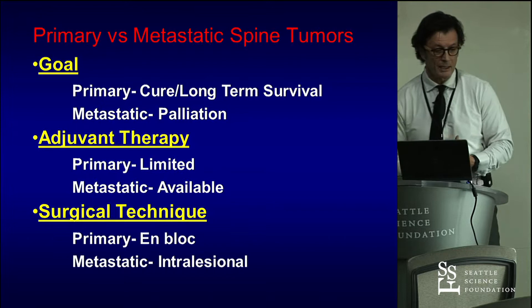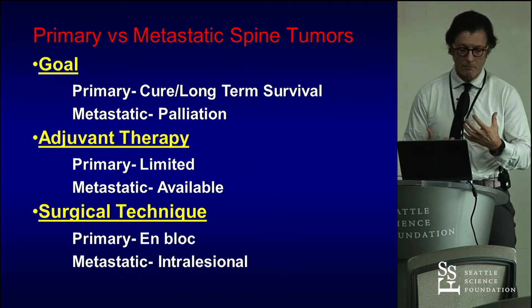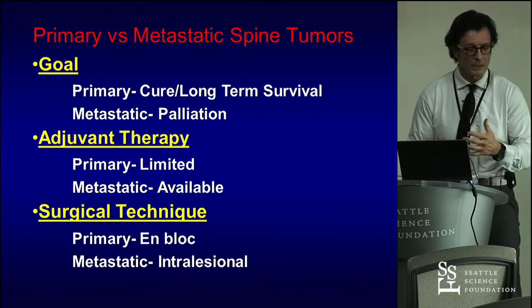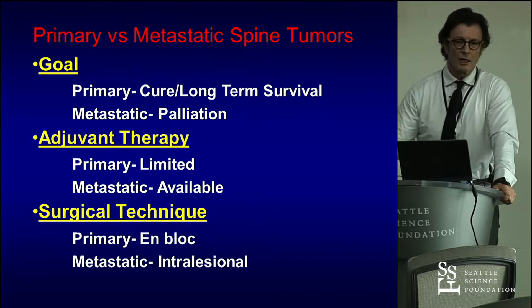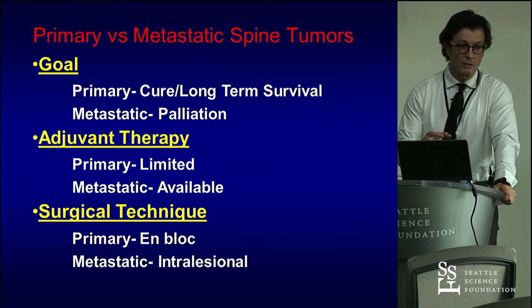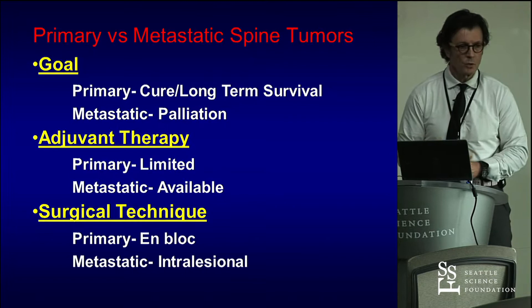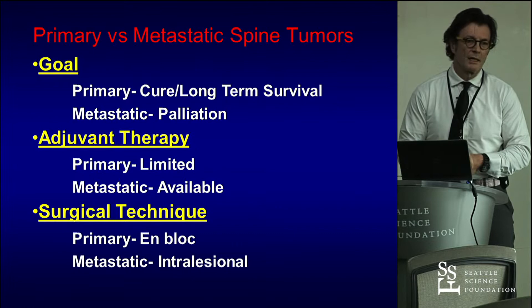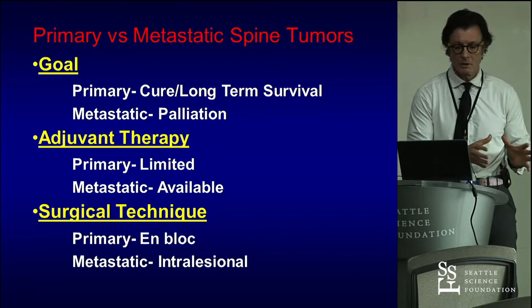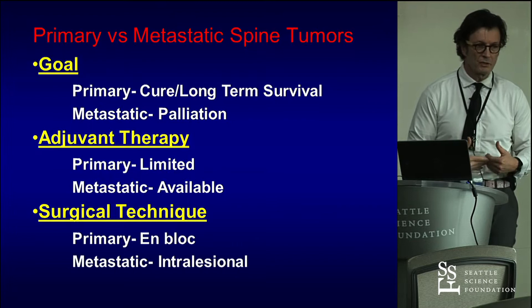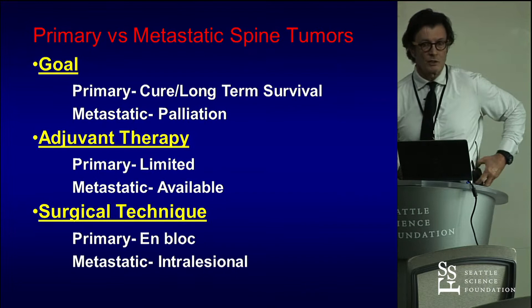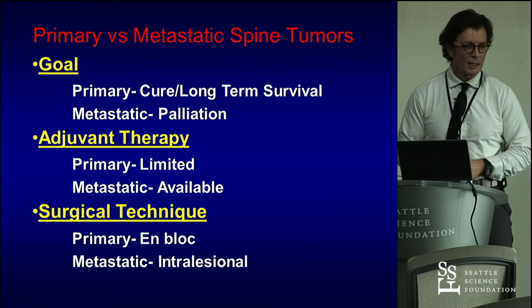When we talk about goals and planning, we must discuss what type of tumor we're dealing with. For primary bone tumors — chordomas, sarcomas — your goal, if you can, is to cure the patient of cancer. As surgeons, there are not many opportunities where you can say 'I'm going to do this surgery and by the time it's over, you're cured of cancer.' That's an amazing tool we have for primary bone tumors, where the goal is cure and potentially long-term survival. For metastatic disease, we're talking about palliation — improving quality of life from pain or neurological deficit — we are not there to cure the patient.